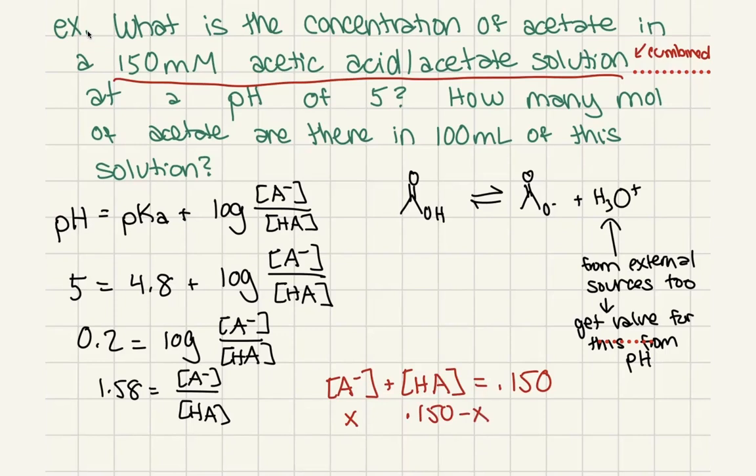And so what we can do is we can say, 1.58 equals X divided by 0.150 minus X. And now we just have to plug and chug. And that's going to give you a value where our X is going to be 0.092. And I'm not worrying about my rounding and stuff here. But the answer here would be about 0.092 molar.